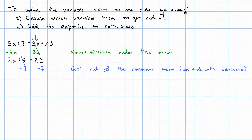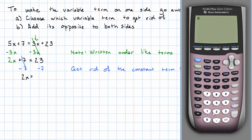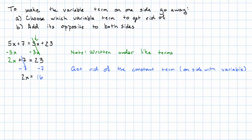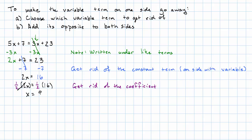On the left I'll have 2x. On the right I'll have 23 minus 7, which may seem like a job for the calculator — it's 16. And finally, I'll get rid of the coefficient. To do that, I'll multiply both sides by the reciprocal of 2, so multiply both sides by one half. The half and the 2 cancel out, and I'm left with just x on the left. Half of 16 is 8. My solution is x equals 8.